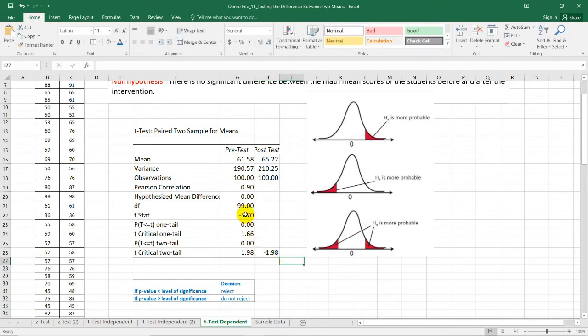Comparing the two values, negative 1.98 is the line that separates the critical and non-critical region here. And since negative 5.70 is on the left side of the critical value, then it's on the critical region. And for this, we need to reject the null hypothesis.